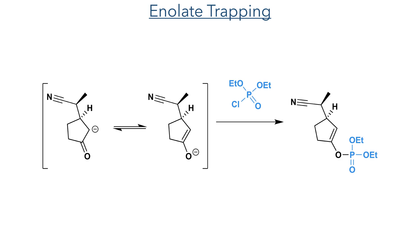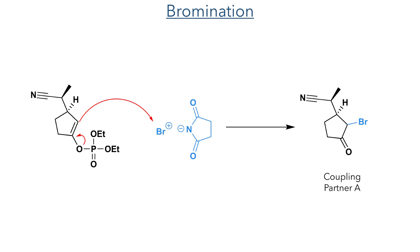This enolate was trapped by chlorodiethyl phosphate, which reacts with the oxygen of the enolate group. This enolate is then brominated by reaction with N-bromosuccinimide, where the enolate attacks the bromonium ion to generate coupling partner A with the elimination of the phosphate group.